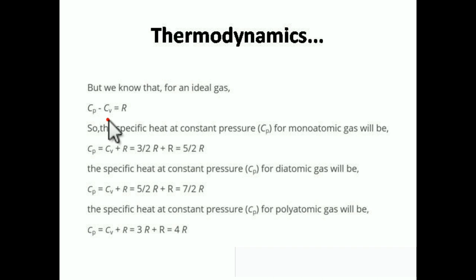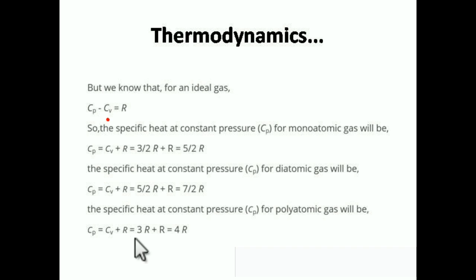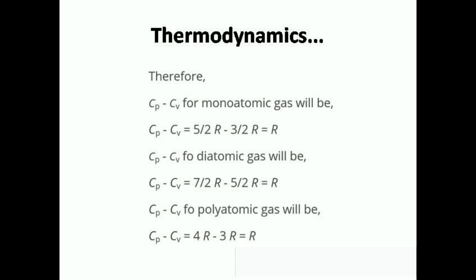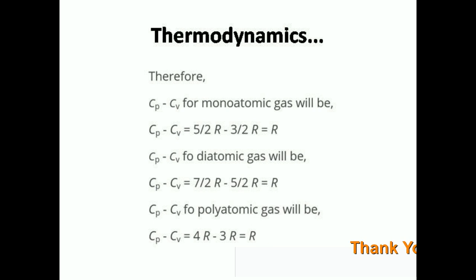Since CP minus CV is always R, we can find CP. For monatomic gas: CP = (3/2)R + R = (5/2)R. For diatomic gas: CP = (5/2)R + R = (7/2)R. For polyatomic gas: CP = 3R + R = 4R. Checking CP minus CV: for monatomic (5/2)R − (3/2)R = R; for diatomic also R; for polyatomic also R. So CP minus CV is always equal to R.